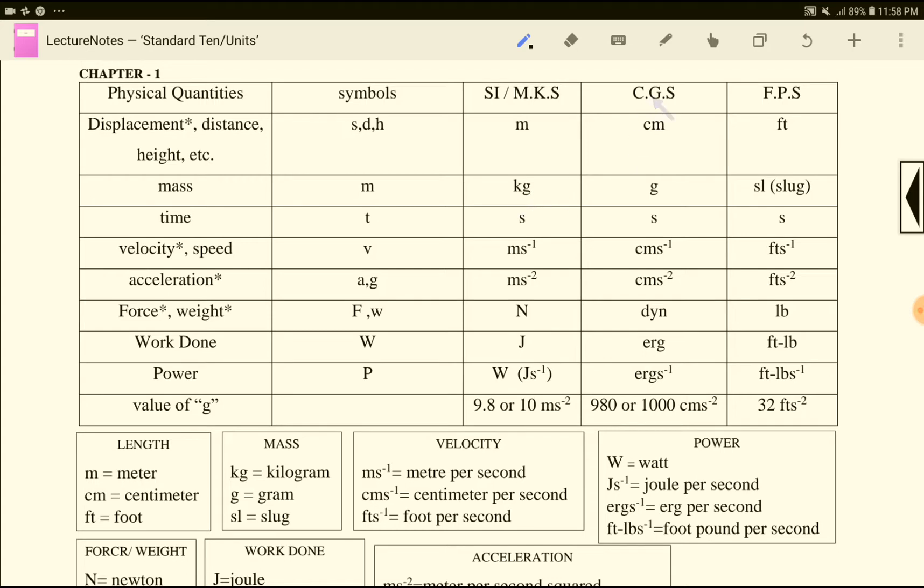Kilogram. CGS system is gram. FPS system is slug. Now time - time is three systems. MKS system is second, CGS system is second, FPS system is second.